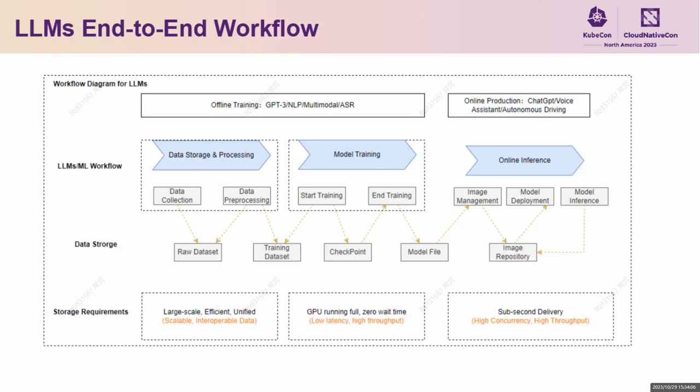The third stage is model archiving and online inference. In this stage, the storage requirement is fast distribution in seconds. When the model passes archiving validation, it needs to be quickly deployed to online inference services to generate business value. The entire update process requires fast and synchronized distribution, ensuring that all inference nodes complete model updates at the same time. This avoids inconsistency among inference nodes that could affect inference performance and user experience. Sub-second level synchronization requires storage with high concurrency and throughput capabilities.